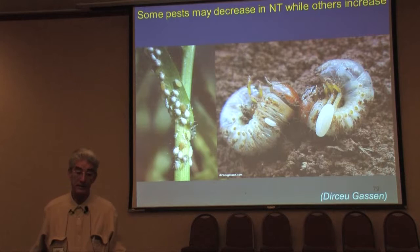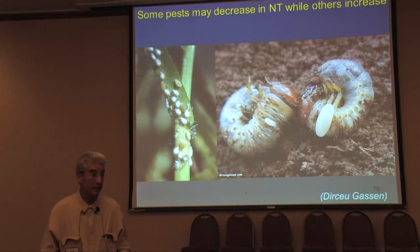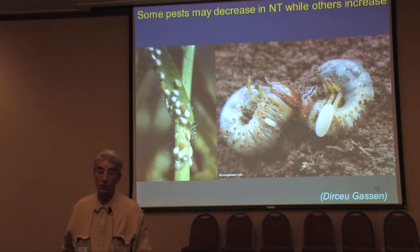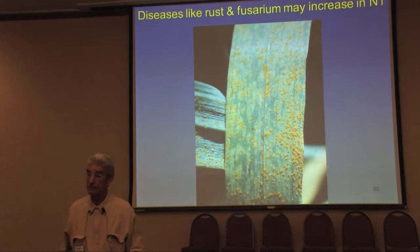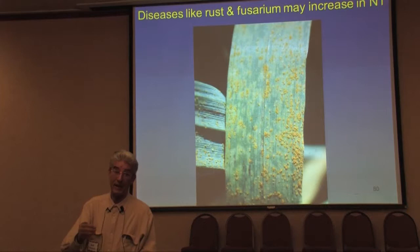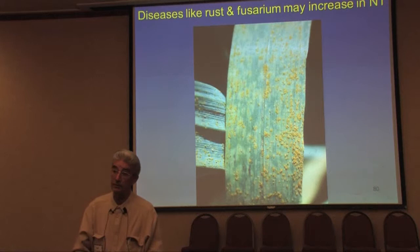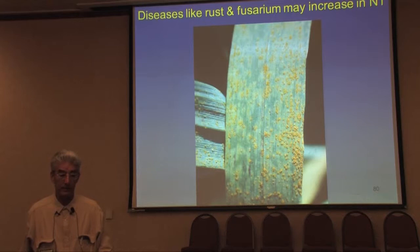Some pests may decrease in no-till while others may increase. Aphids in general will decrease because aphids do not like the reflection of light — they prefer to fly into a field with bare soil than one with residue on top. Diseases like rust and Fusarium may increase because rust survives in the residue. When a raindrop hits the residue, it splashes back to the plant, taking the fungal disease to the new germinating plant and infecting it immediately. That's why rust and other necrotrophic fungi are very easily transmitted to the next crop.